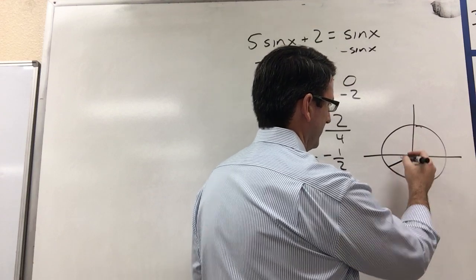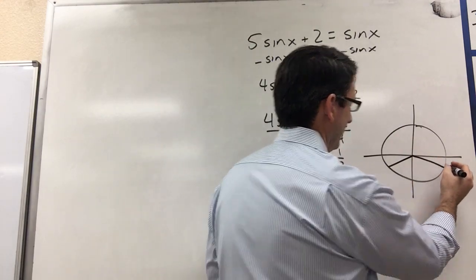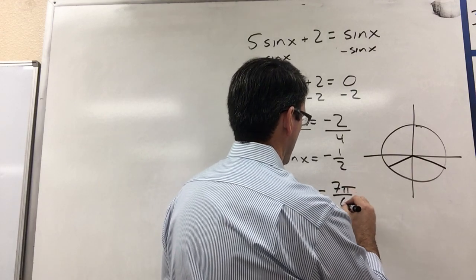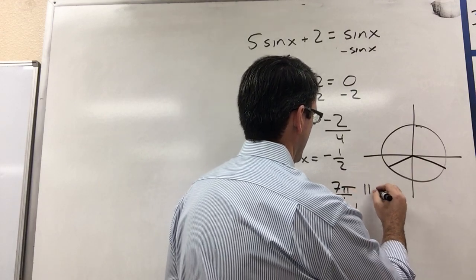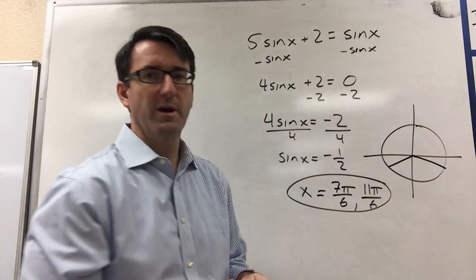And that's going to be 7π over 6, and over here, which would be 11π over 6. So 7π over 6 and 11π over 6. Those are going to be our two answers.